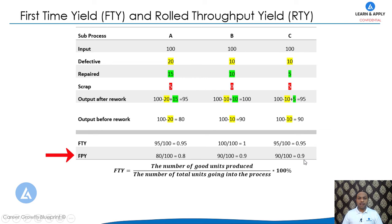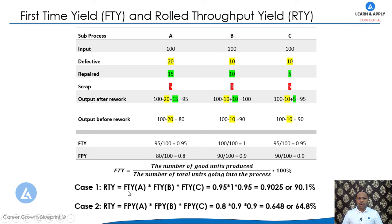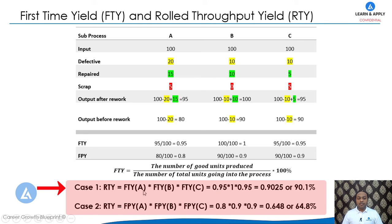Now let's calculate Roll Throughput Yield. RTY is the multiplication of the First Time Yield of Process A, Process B, and Process C. That is 0.95 × 1.0 × 0.95, which equals 0.9025, or 90.25%.